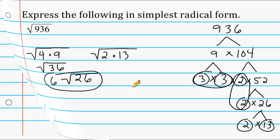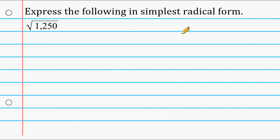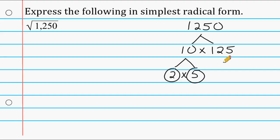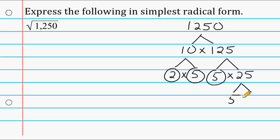Let's go ahead and do one more example. We have 1250 and need to break it down into all prime factors. Because this number ends in a zero, I know that 10 can fit into 1250 equally, so we do 10 times 125. We break 10 down into 2 times 5, and both 2 and 5 are prime so we circle them. 125 is composite, so we break it down further by multiplying 5 by 25. And 25 we can break down into 5 times 5, and we circle both of those.